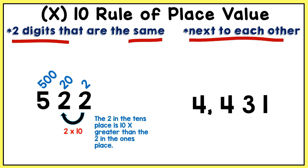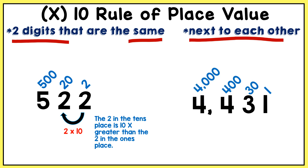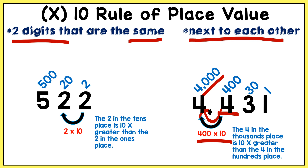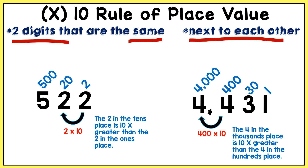Let's look at another example: 4,431. I have two digits that are the same and next to each other, so the times 10 rule applies. The ones place is worth 1, tens place is worth 30, hundreds place is worth 400, and thousands place is worth 4,000. Moving in this direction, I take the 4 in the hundreds place — 400 — and multiply it by 10 to get 4,000. So the 4 in the thousands place is 10 times greater than the 4 in the hundreds place.